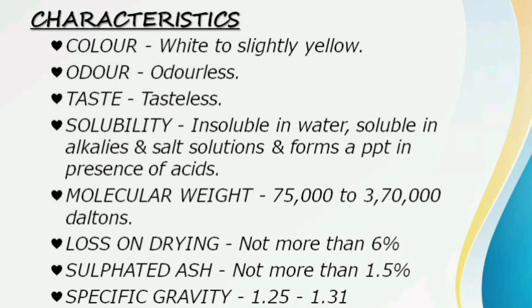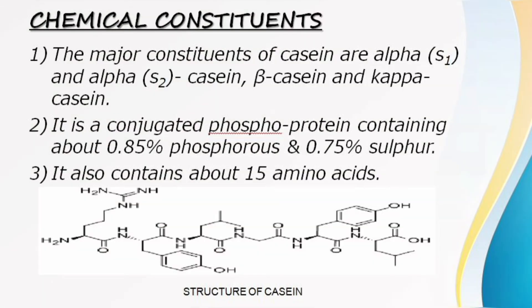These are the chemical constituents of casein. The major constituents are alpha S1 and alpha S2 casein, beta casein, and kappa casein. It is a conjugated phosphoprotein. It contains about 0.85% phosphorus and 0.75% sulfur, and contains about 10% amino acids.